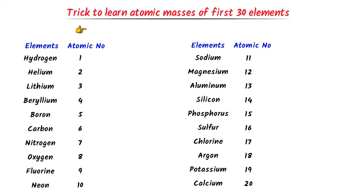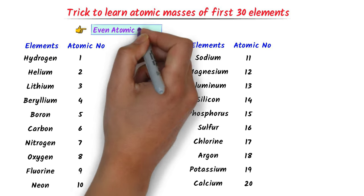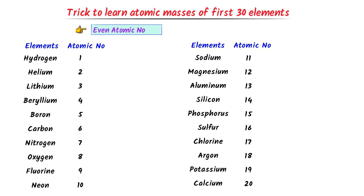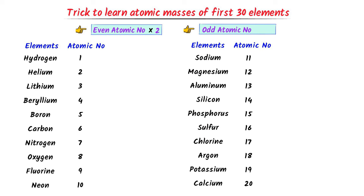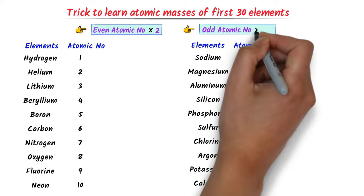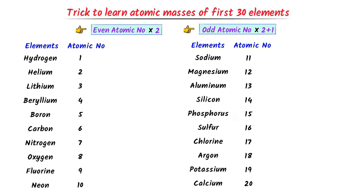Now we will learn two famous tricks to remember the atomic masses. The first one is: if the atomic number is even, we multiply it by 2. The second trick is: if the atomic number is odd, we multiply it by 2 and add 1 to it.